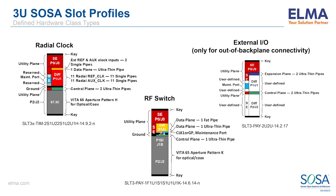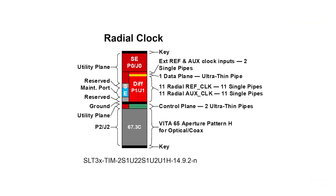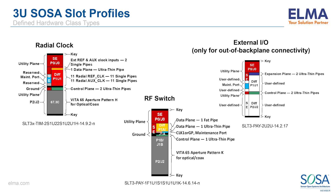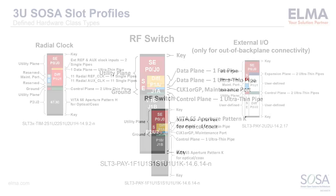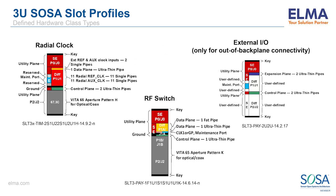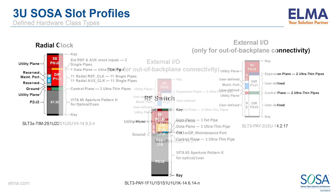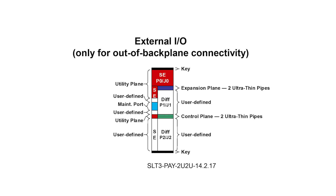Rounding out the 3U profiles are three specialty profiles. The first is a radio clock profile, which contains multiple ports for radio ref clock and aux clock, in addition to the aperture for receiving GPS or other high-precision time sources. Next is an RF switch with a large, double-sized aperture for coaxial connections. The last is the only slot profile that contains user-defined pins — the external I/O profile, included to allow for a way to bring large numbers of discrete signals into a system. Some systems, most notably legacy aircraft, have a large number of discrete signals, so this profile was created to accommodate that.